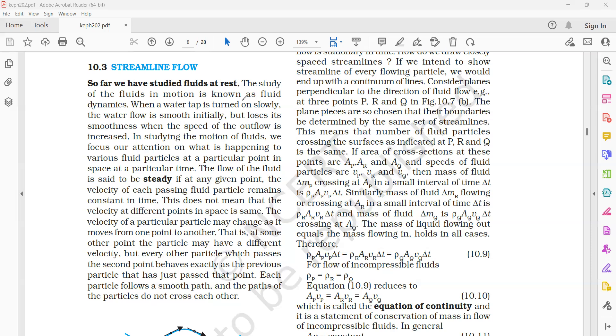If the flow of the fluid—whatever fluid is flowing—if the velocity of each passing particle, for example, I will take two points, this is point A and this is point B, and the fluid particle which is passing through point A, if each particle has the same velocity V, then the fluid is said to be in steady state.